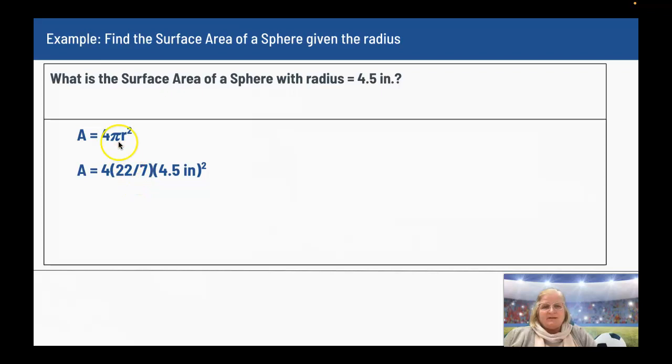22 over 7 is pi, r is given. It's 4.5 inches. When I plug this into a calculator, I'm taking 4 times 22 times 4.5 squared, so 4.5 times 4.5, and then I'm dividing by 7. And I ended up with 254.6 inches squared.